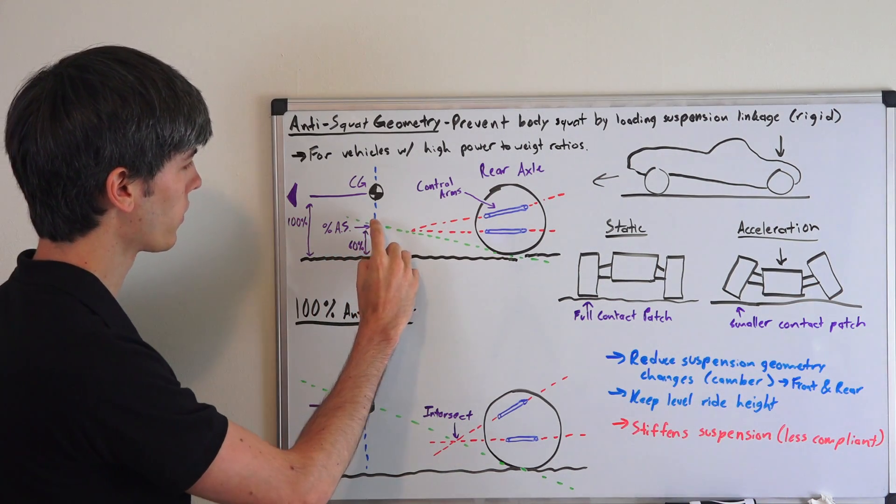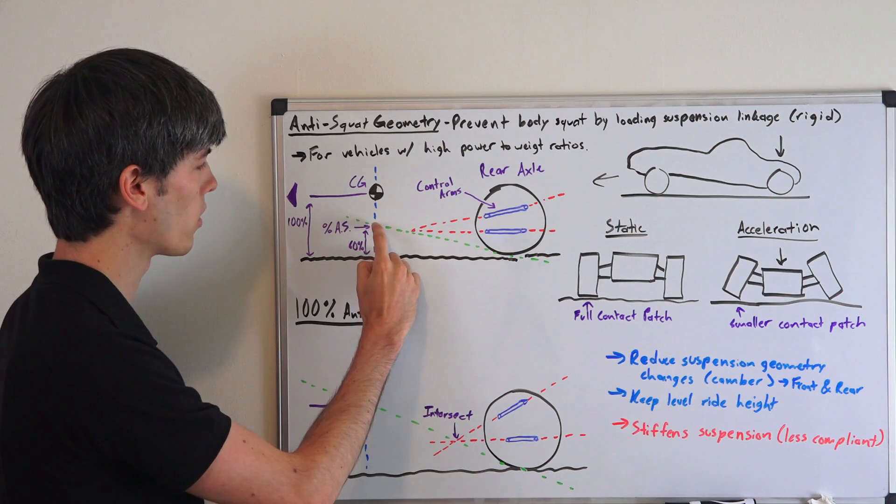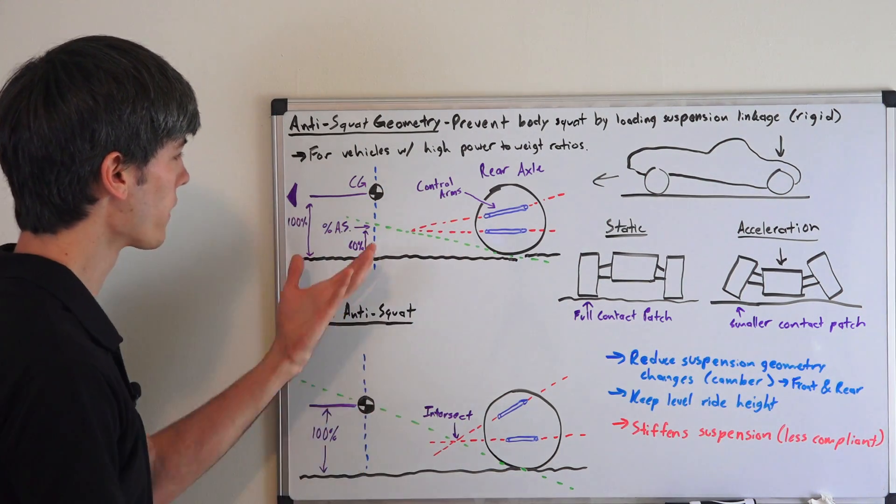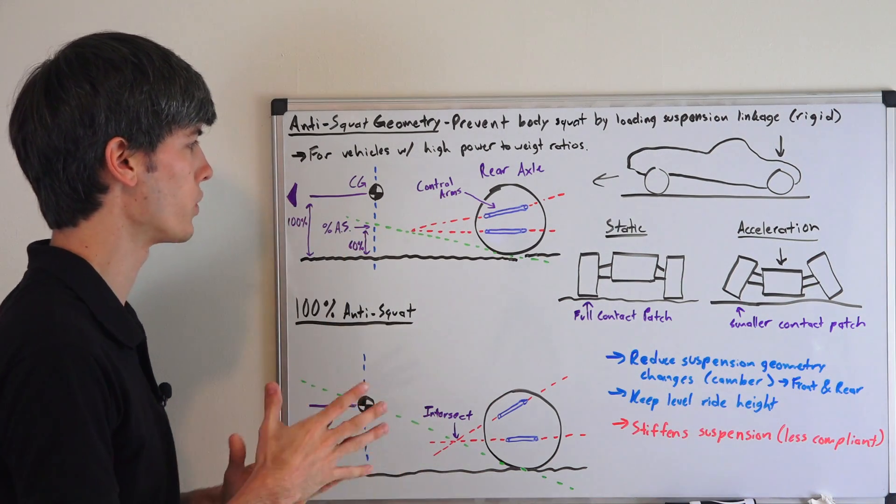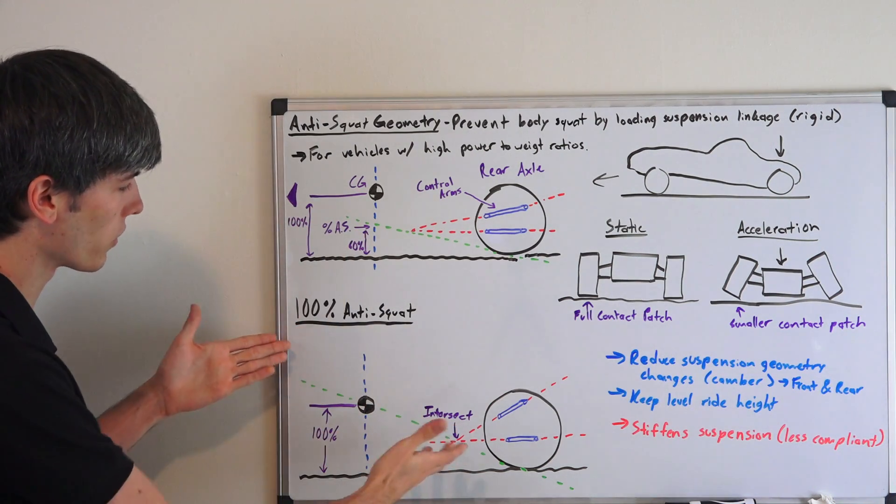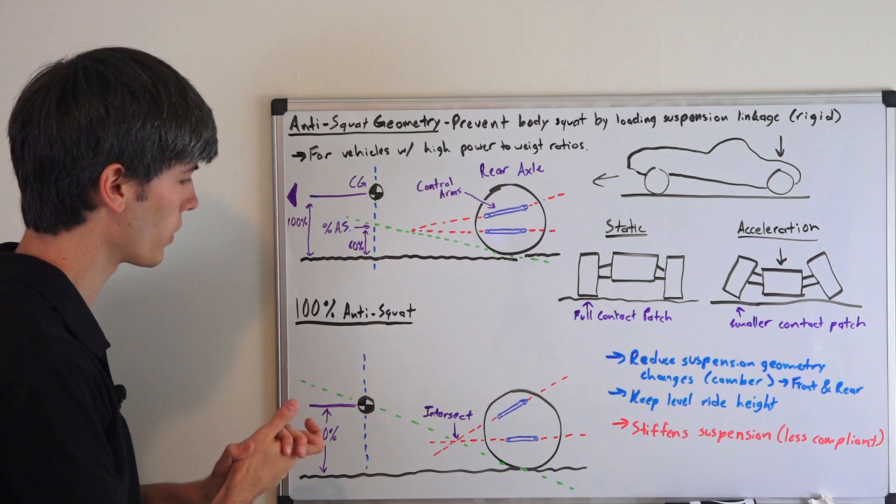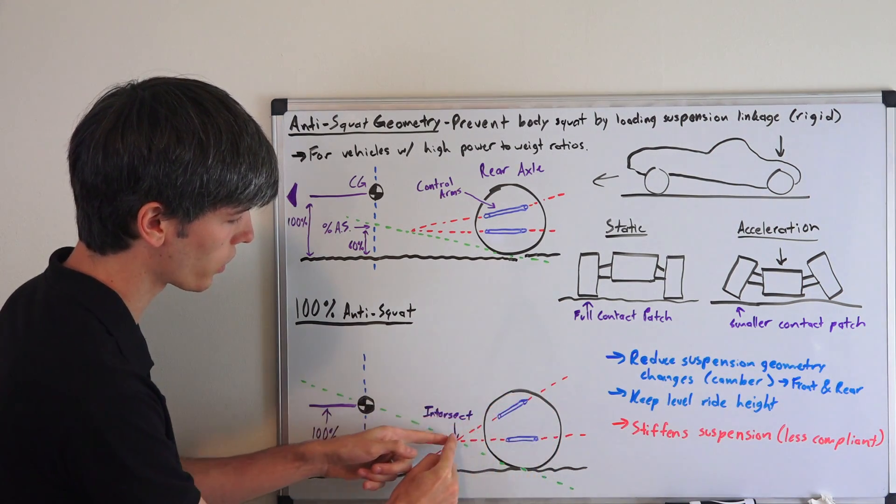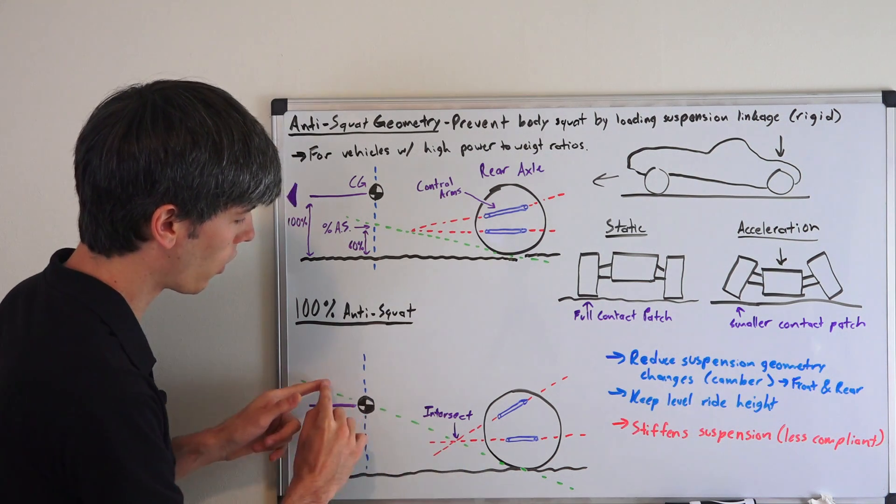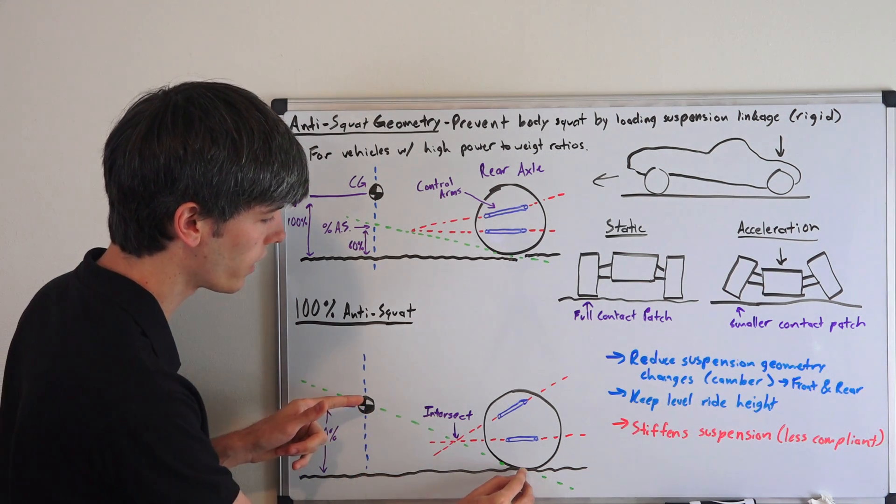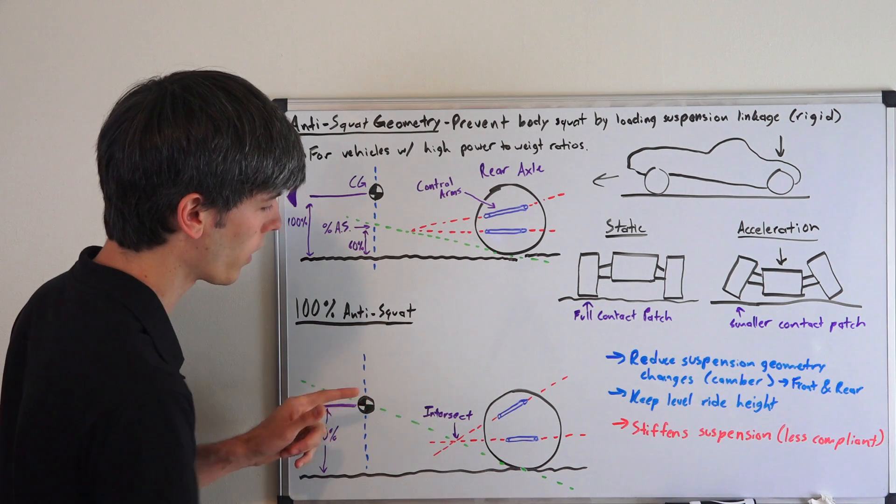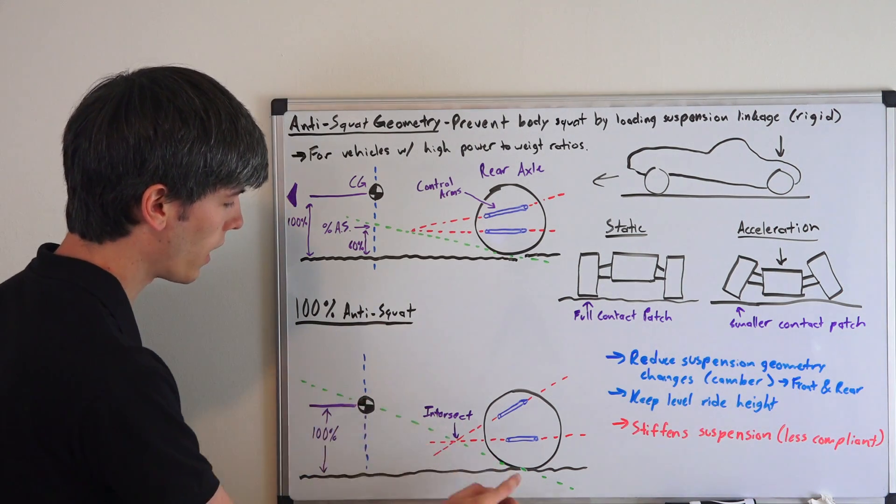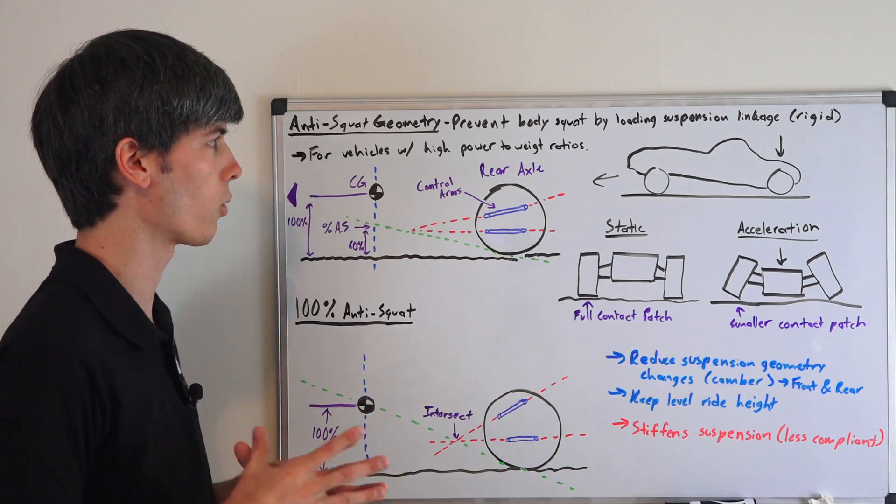If this distance is where this point is located is 60% of the distance to the center of gravity, then this will have 60% anti-squat geometry. And then very simply once again with 100% anti-squat geometry, basically all you're doing is making sure that the point at which the suspension linkage intersect is on the line connecting the center of gravity and the center of the tire on the ground. As long as that intersection occurs on this line, you're going to have 100% anti-squat geometry.